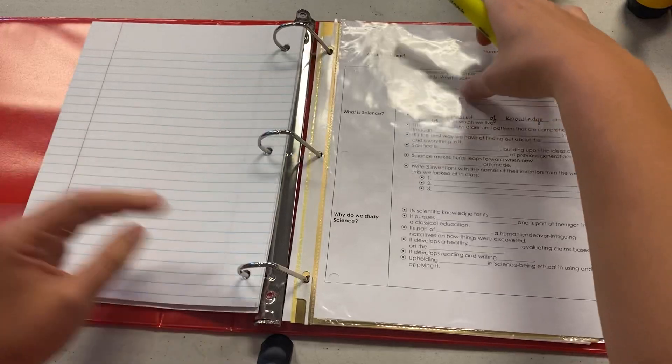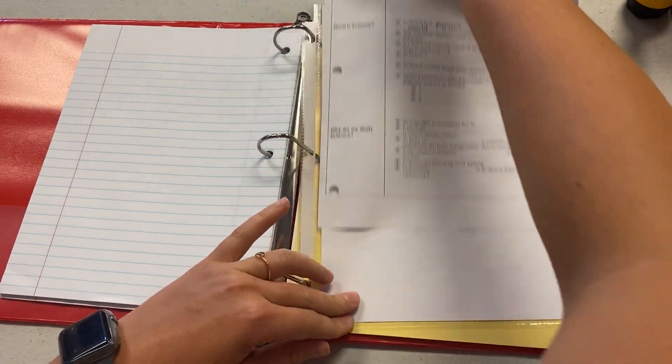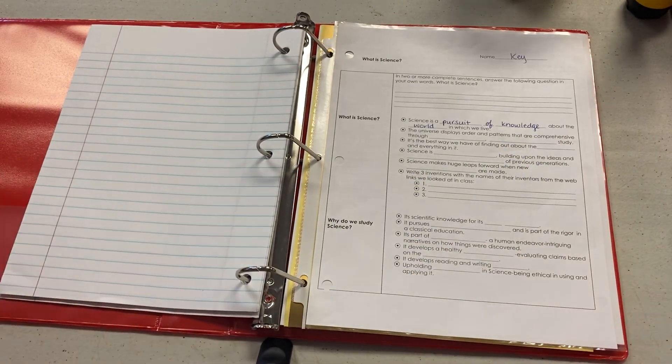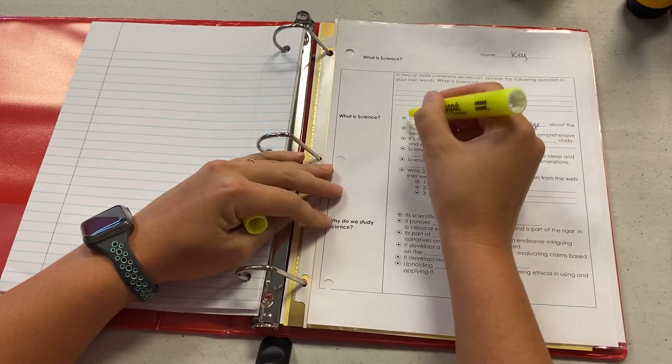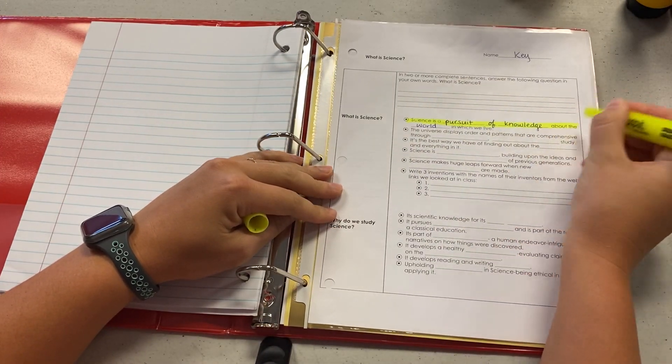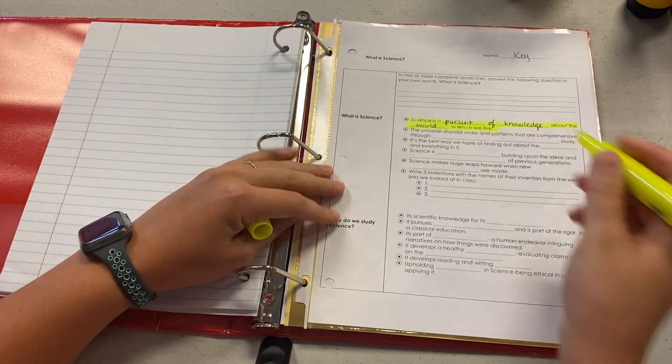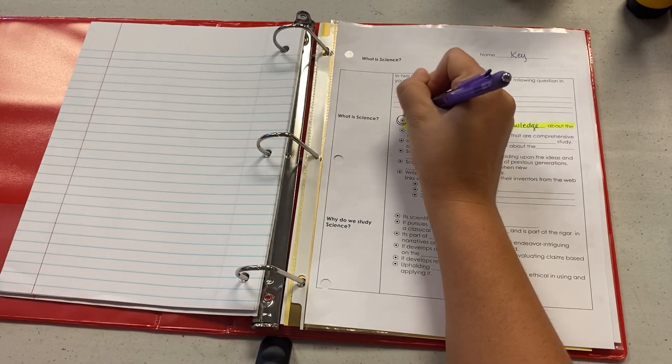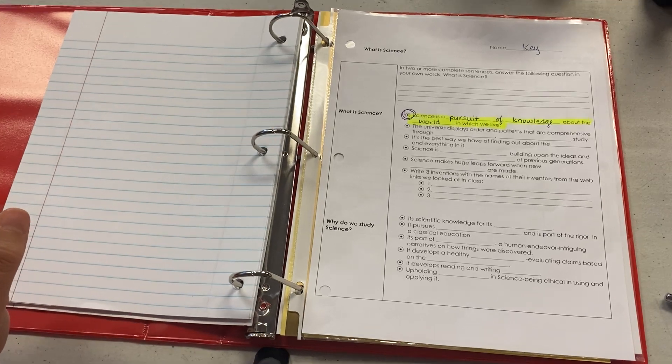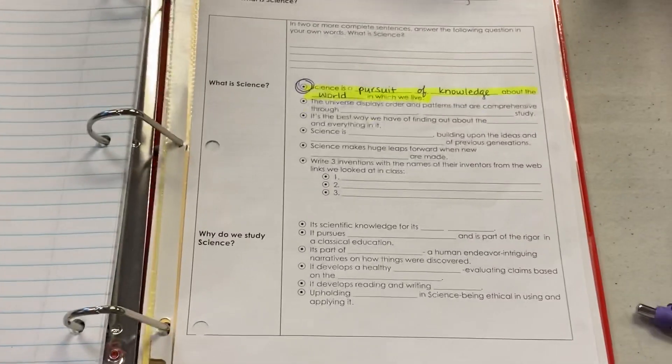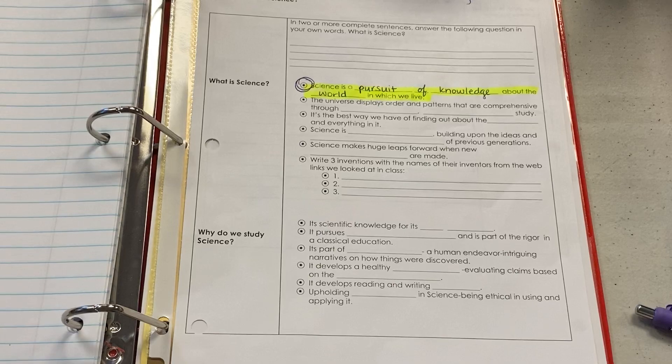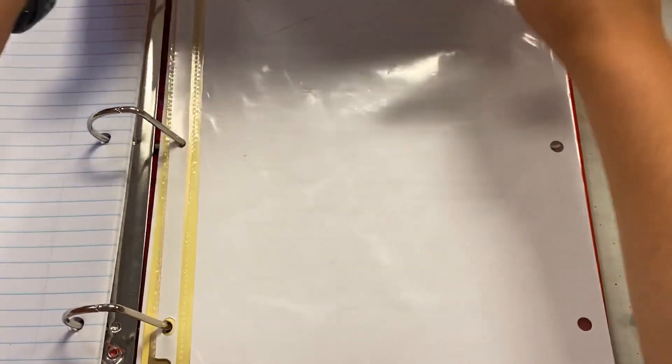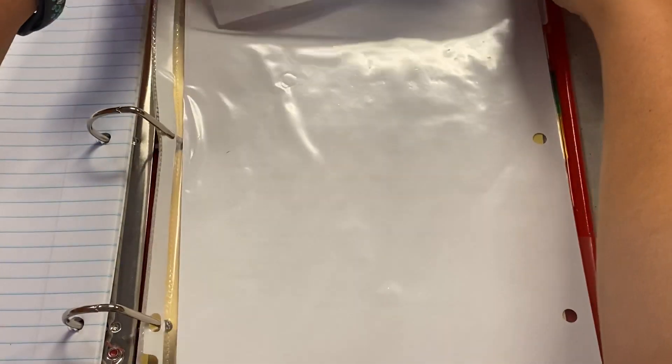So the first thing you need is to take out your what is science notes for a second. For the quiz, you do need to know the definition of science, that science is a pursuit of knowledge about the world in which we live. If you have a highlighter, do exactly like I'm doing and just highlight that one section. If you don't, you can use either a colored pencil or a pen maybe or even just your regular blue pen and go from there, but that's kind of what it should look like once it's highlighted. Just somehow mark it so you know to study it. All right, I'm going to put it back in the page protector.